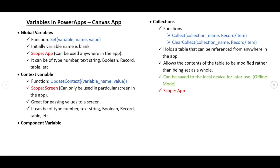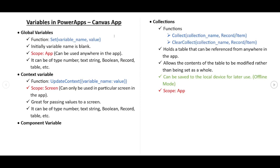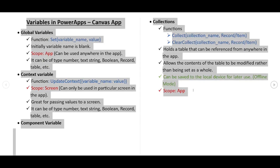In today's video we are going to discuss variables in Canvas App. Before starting, let's first discuss what a variable is. A variable is nothing but a name that is used to refer to a piece of information or data. That data can be of type number, string, boolean, etc.